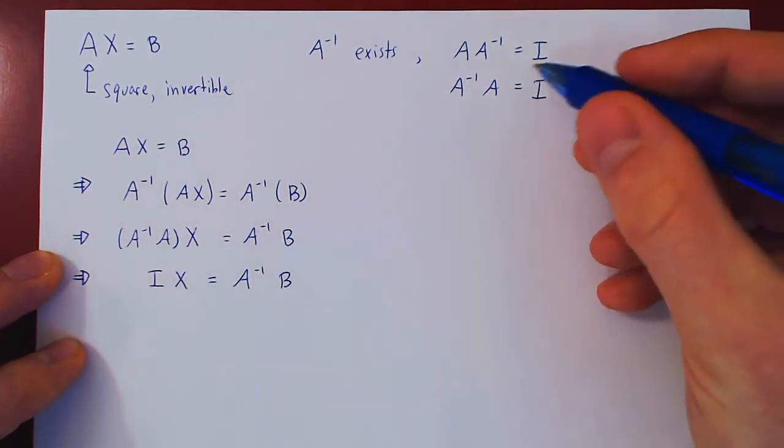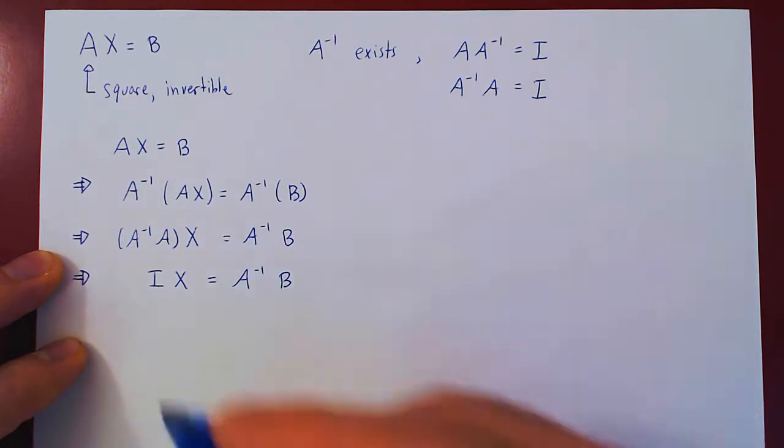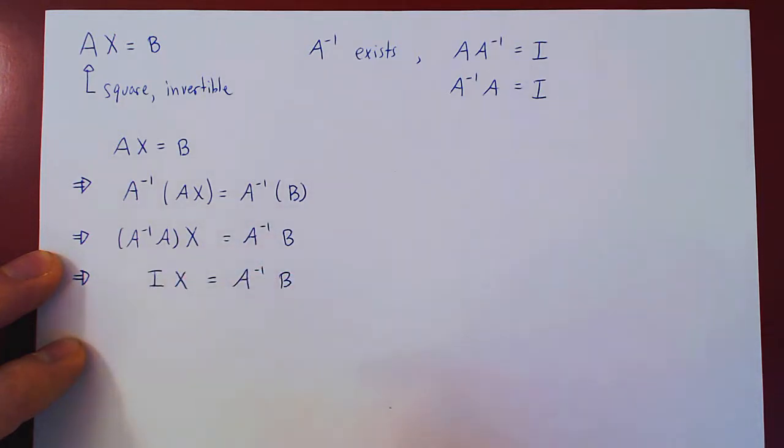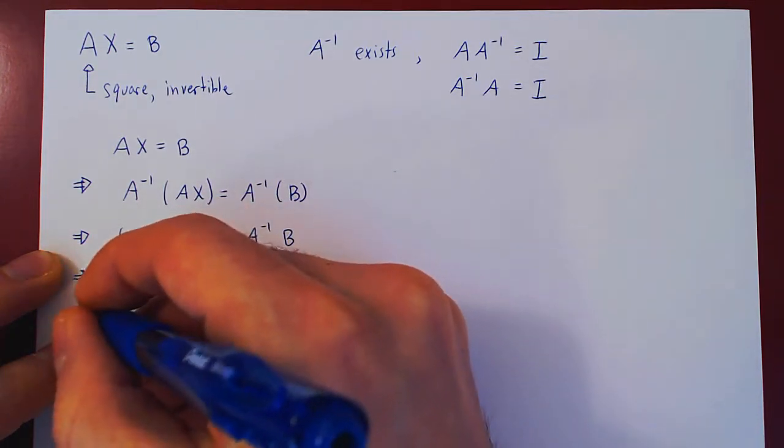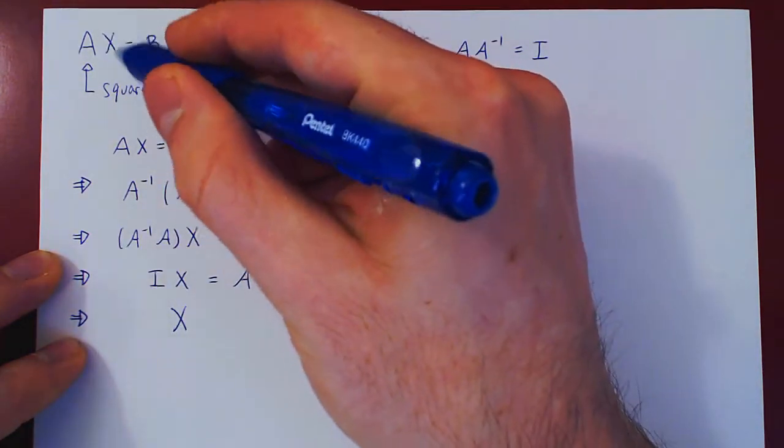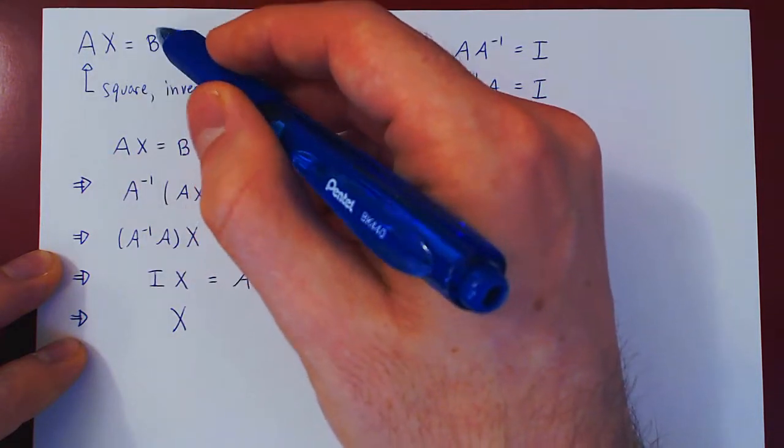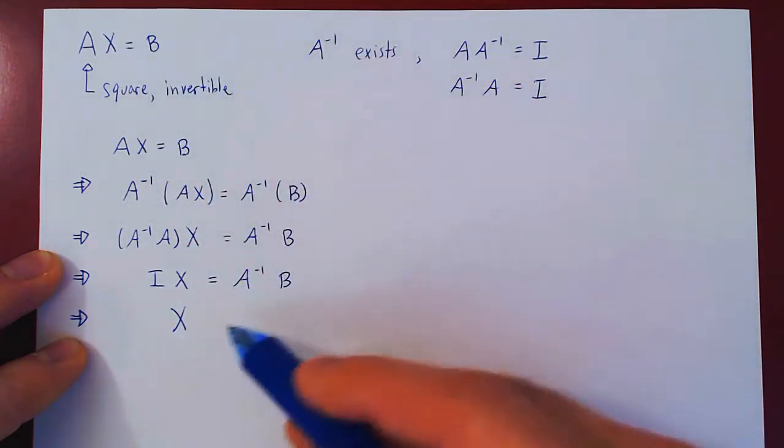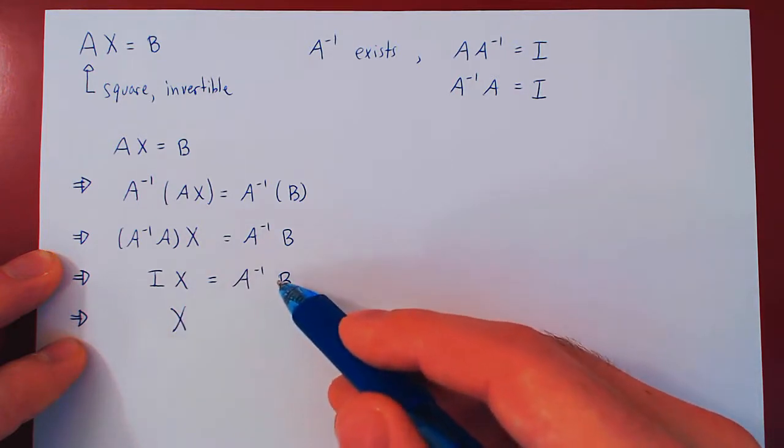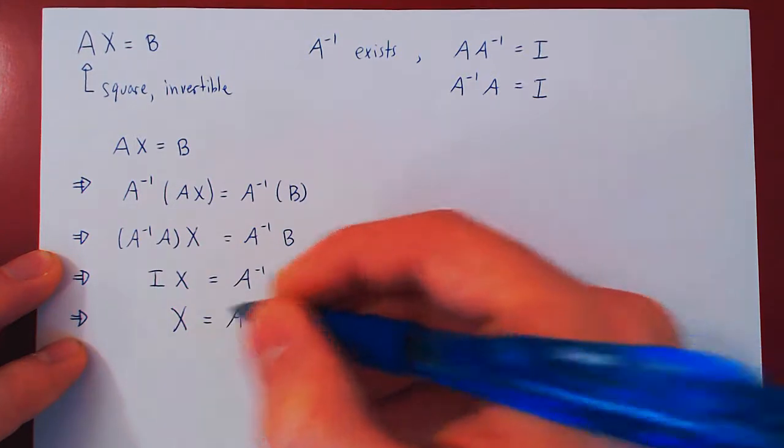But if you remember, the matrix I is the identity matrix, and it has a very special property. I times anything, it's just the matrix back. This matrix behaves like the real number one. And so I times X is X. Therefore, our vector variables, the vector we are trying to solve for, as we know the matrix of coefficients and we know the matrix of constant terms, and we're trying to solve for X, well, you can see quite simply, the vector variables X is A inverse times B. And that's it.